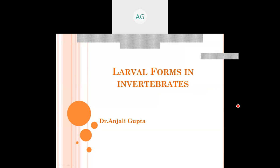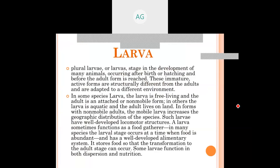In invertebrates, what is a larva? Larva is part of the life cycle. Many invertebrate animals go from egg to larva, larva to pupa, and pupa to adult. This is a cycle — the complete metamorphosis cycle. There are two types of metamorphosis: incomplete metamorphosis and complete metamorphosis. In complete metamorphosis, the life cycle begins in the egg, which metamorphoses into larva, then pupa, and then the adult form.